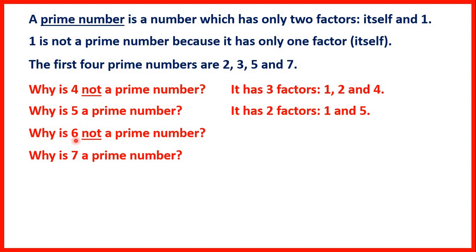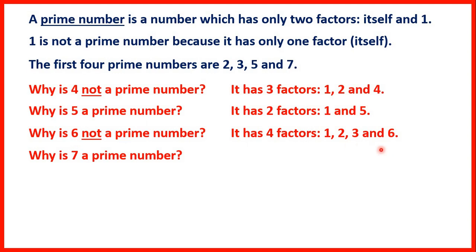So why is 6 not a prime number? That's because it has four factors: 1, 2, 3 and 6 are all factors of 6, because 1 times 6 is 6, but also 2 times 3 is 6, and that's why it's not a prime number.